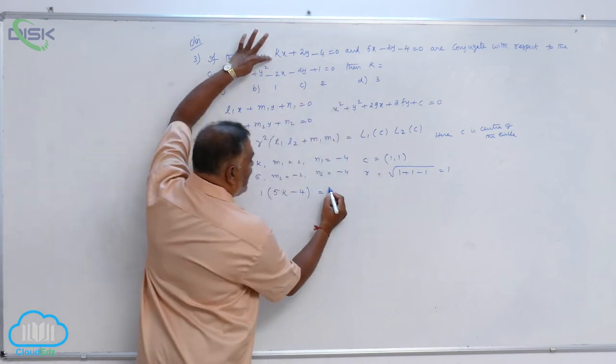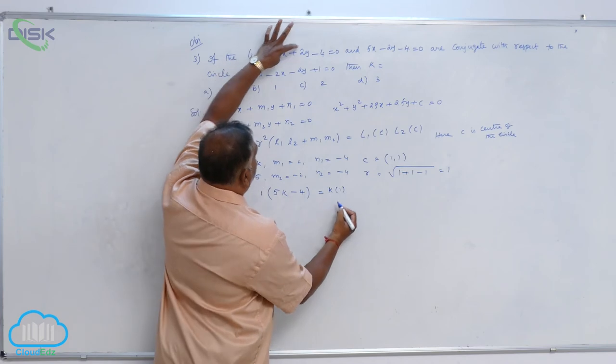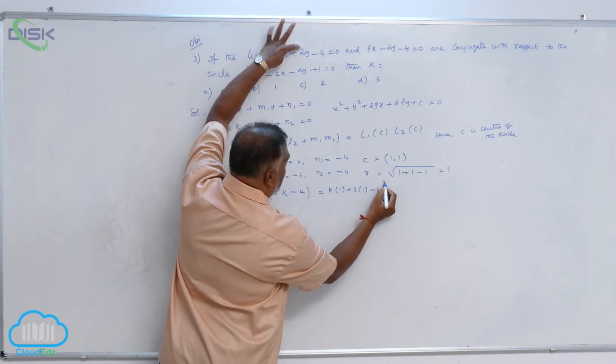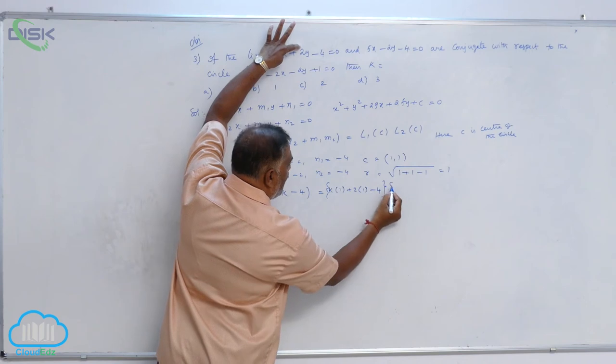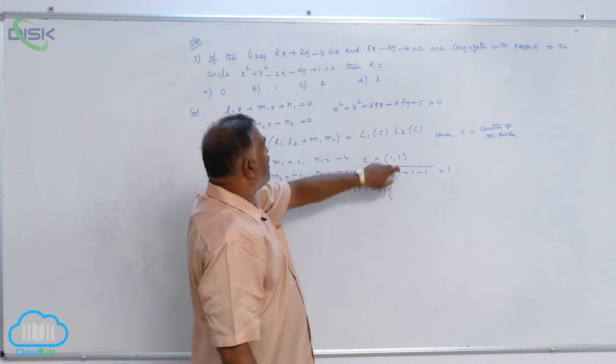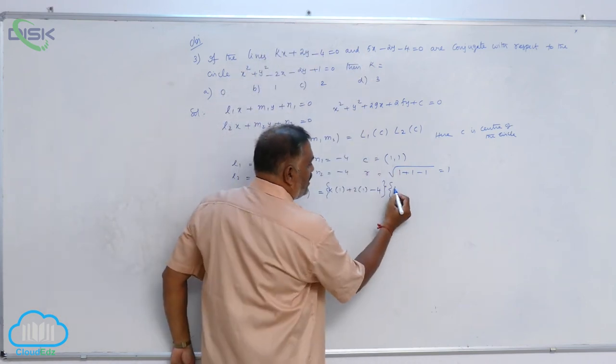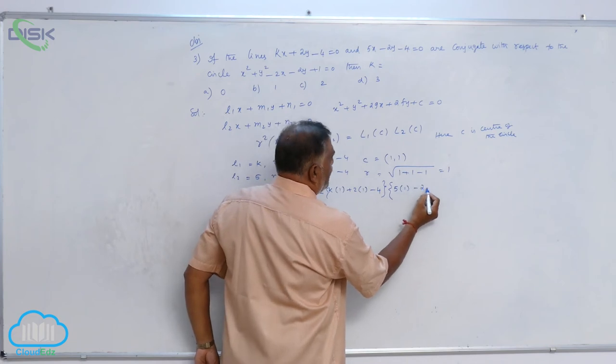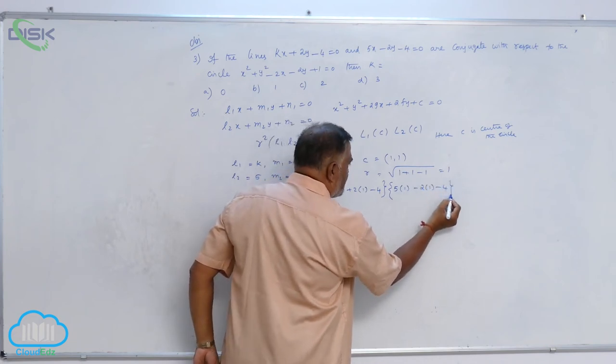k into 1 plus 2 into 1 minus 4, put it in bracket. Again substitute the same point, 1 comma 1 in this equation also, 5 into 1 minus 2 into 1 minus 4.